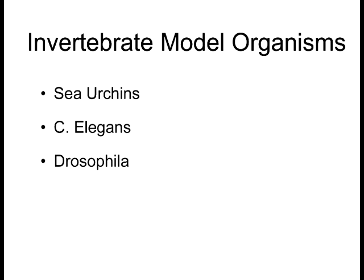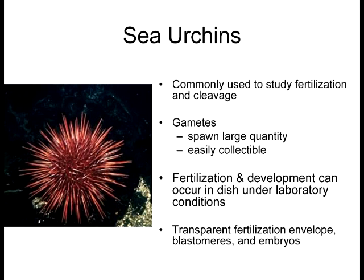The three model organisms we're going to study today are all invertebrate model organisms. The first one is the sea urchin. These are commonly used mainly for fertilization and cleavage — we use them to study the fertilization process that occurs in development as well as the initial cleavage processes. One of the reasons we use these is because they're easy to collect, they spawn in huge quantities, and they're very easy to use and grow in laboratory conditions. The fertilization process can be done in a laboratory.